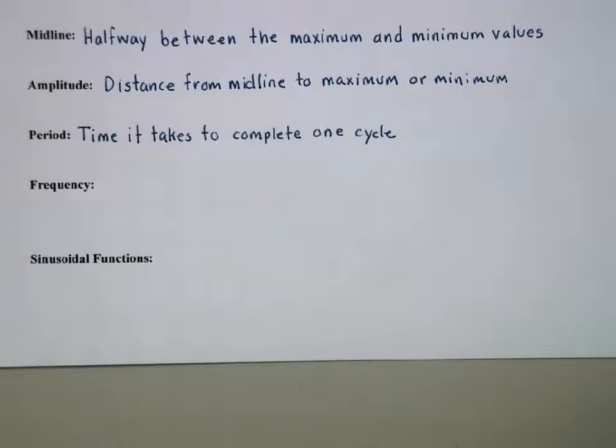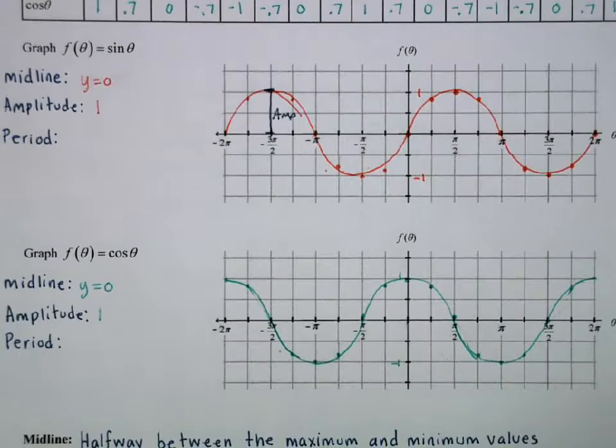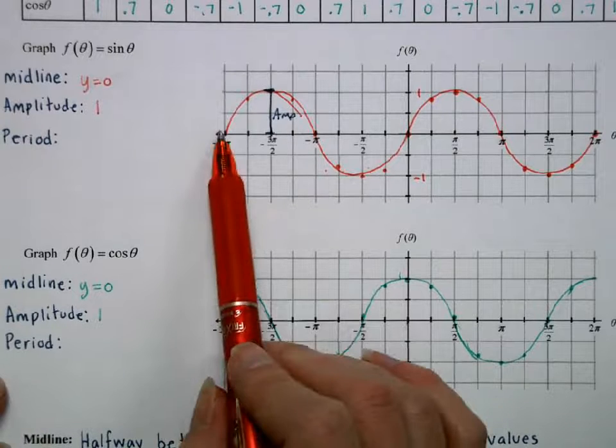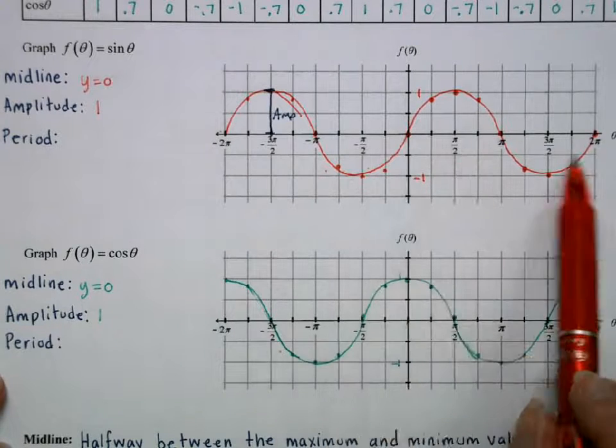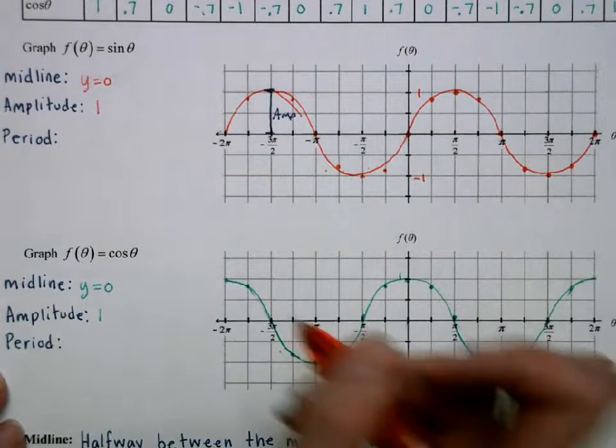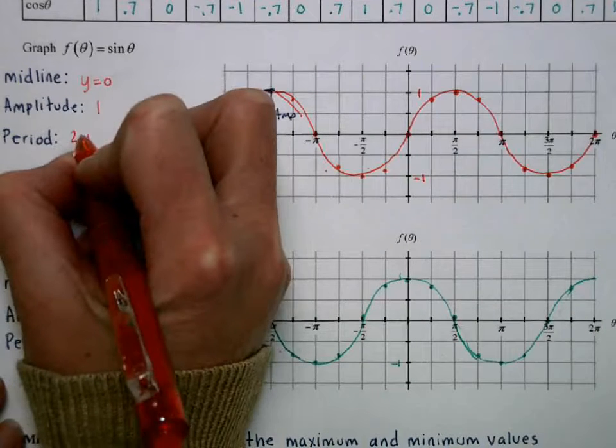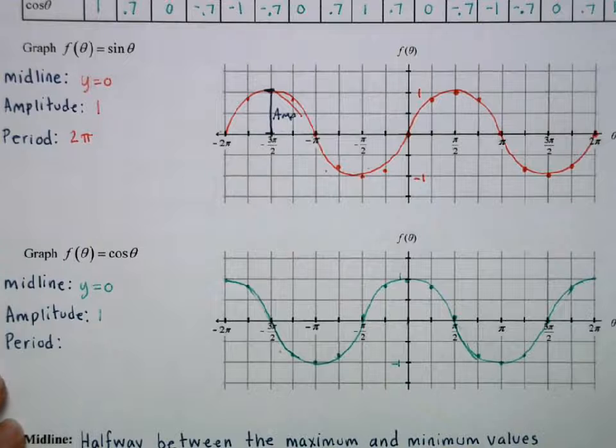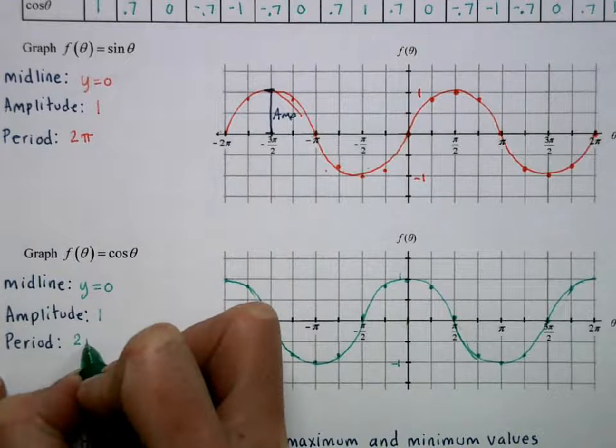The period is how long it takes to complete one cycle. So for my sine and cosine curves, I have two cycles shown, and the time it takes to complete one cycle is 2π. So the period for sine is 2π. The period for cosine is 2π.